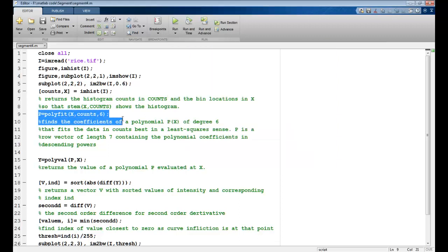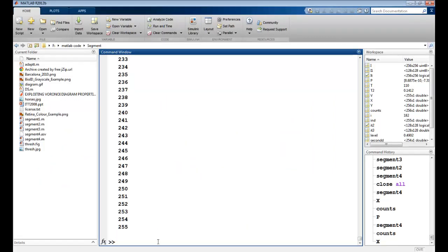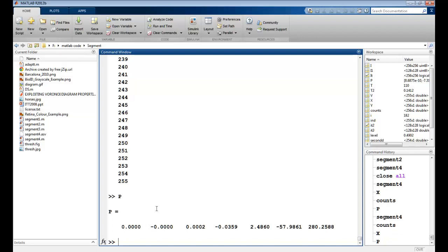So this is automatically given here. So once this is fitted, when I give p, these are the coefficients which I returned for this degree polynomial 6. So x to the power 6, 5, 4, 3, 2, 1 and 0. This is how my polynomial is fitted.